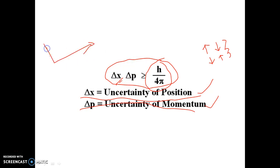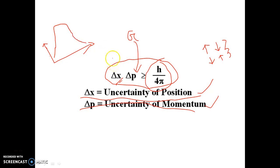ΔP means change in momentum. Gain means — suppose you consider voltage gain — if gain increases, voltage increases, so the speed of the electron will also increase. Basically if speed increases, the momentum of the electron increases too. So we can relate gain with momentum. As gain increases, analogically ΔP increases, so ΔX will decrease. We can make an analogy between ΔX and bandwidth — if bandwidth is large, electrons can be found over a wide area so ΔX is large; if bandwidth is small, ΔX is small.